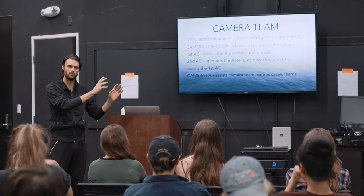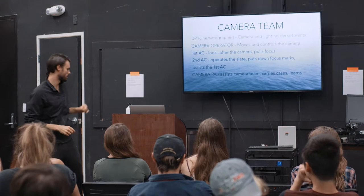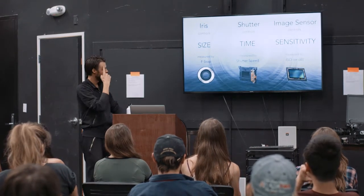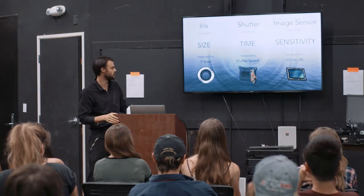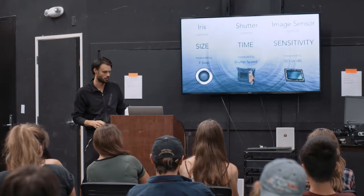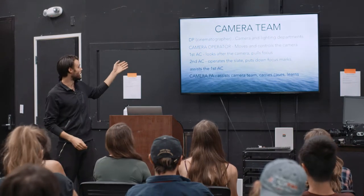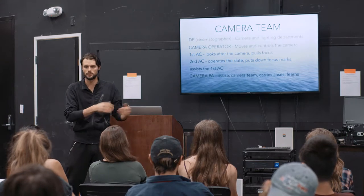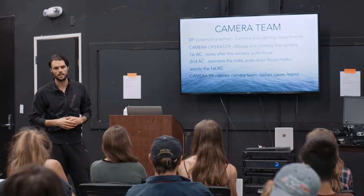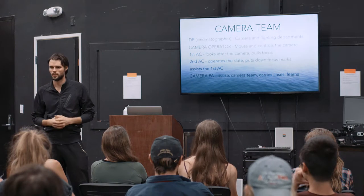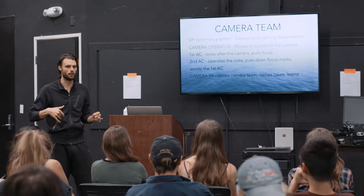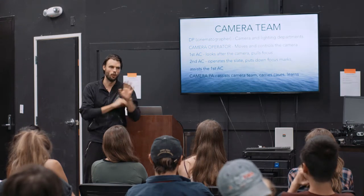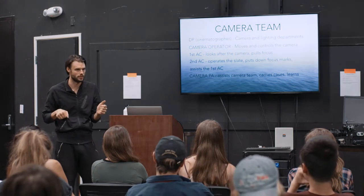The cinematographer oversees the whole process and funnels the director's vision through a visual medium — saying, this is the feel you want, and translating that feel into f-stop, shutter speed, and ISO. The camera operator is literally the person on the camera. On many sets the DP also operates, but on bigger TV shows, movies, and union projects you'll have a separate camera operator while the DP sits back at the monitor with the director, talking big picture.